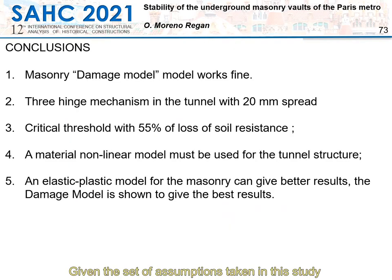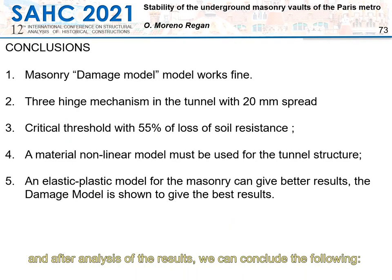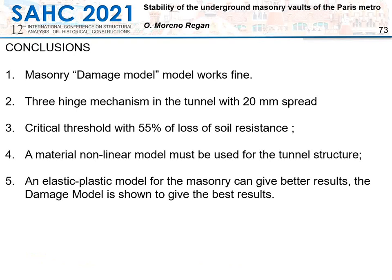Given the set of assumptions taken in this study and after analysis of the results, we can conclude the following: first, the damage model gives good results; second, a three-hinge mechanism was observed in the tunnel with a 20 millimeter spread of the supports; third, a 55% loss of soil resistance was found as a critical threshold for displacement; fourth, a non-linear model must be used for masonry; and fifth, the elastic-plastic model for masonry gives good results, but not as good as the damage model.